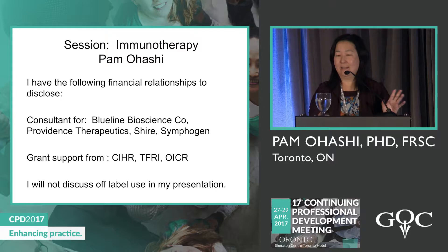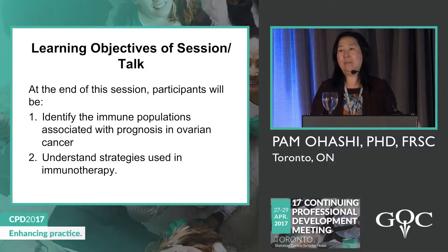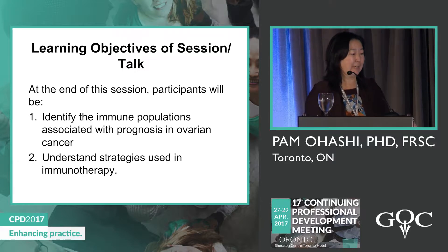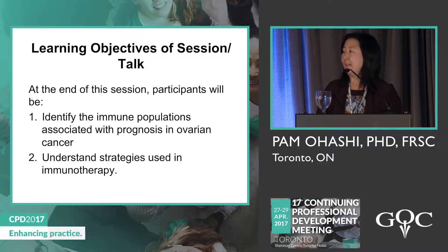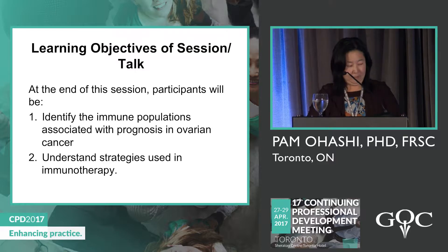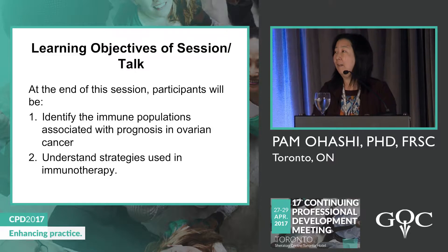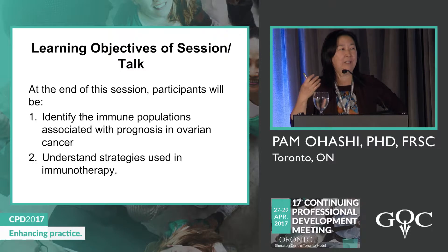Today I'd like to give an overview about the immune system, how it works and gets activated, identify the different cell populations associated with prognosis in ovarian cancer, and discuss strategies we should be thinking about when designing clinical trials for ovarian cancer. I'm happy to take questions as I go along, since we all have different backgrounds.